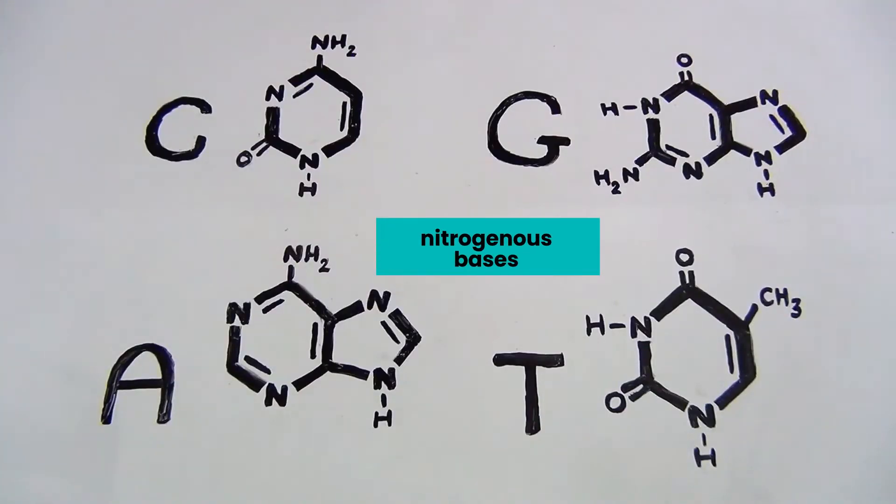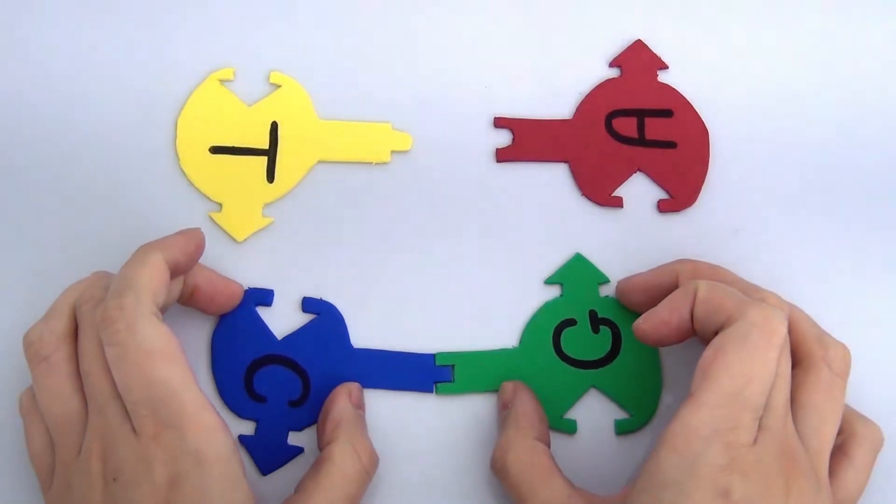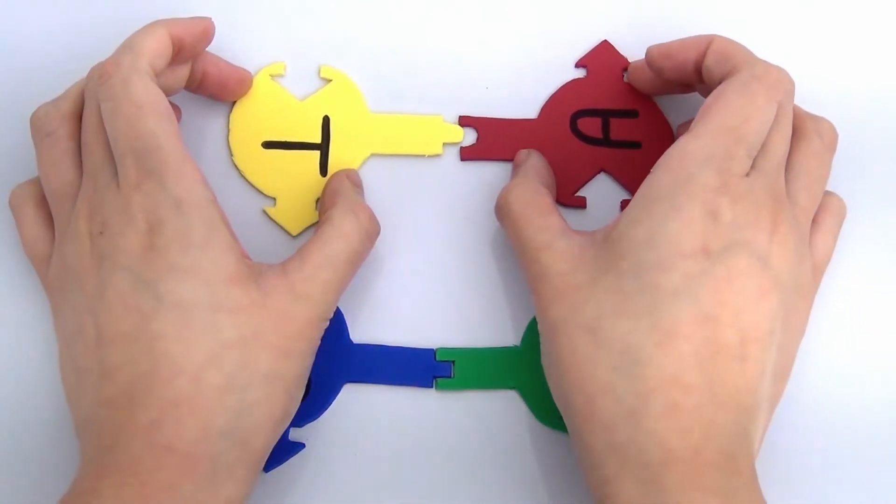There are four nitrogenous bases in DNA: cytosine, guanine, adenine, and thymine. These bases hydrogen bond with each other in a specific way called complementary base pairing, cytosine with guanine, and adenine with thymine.